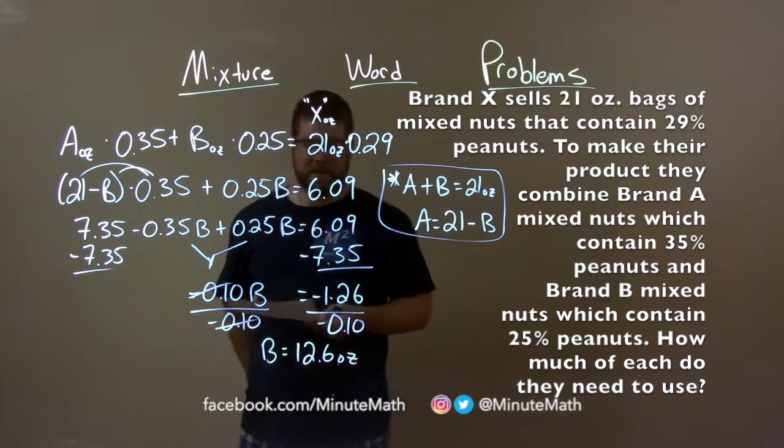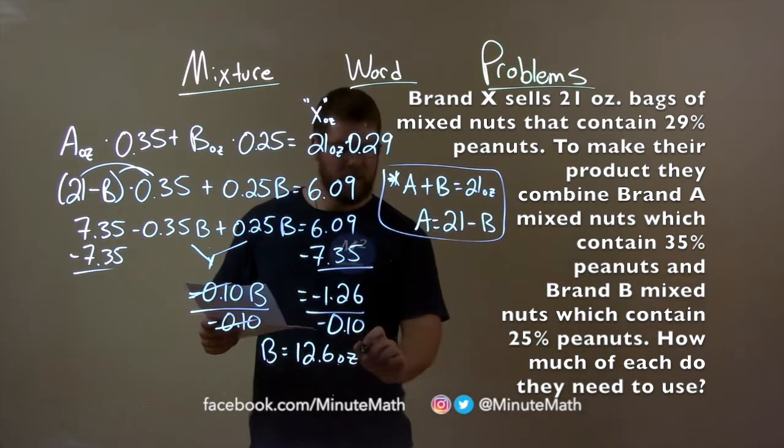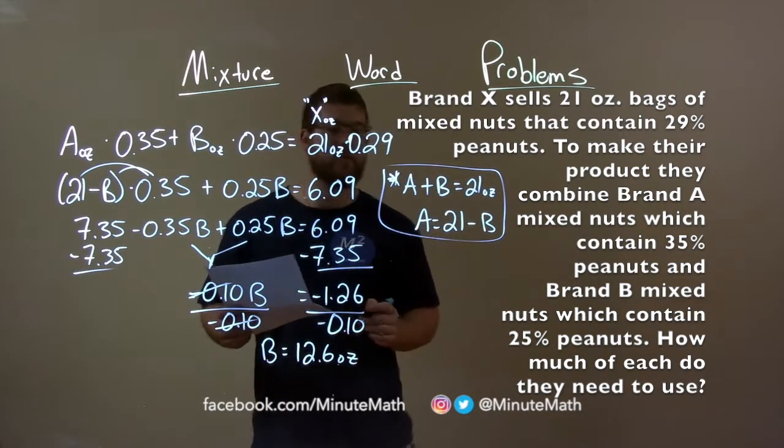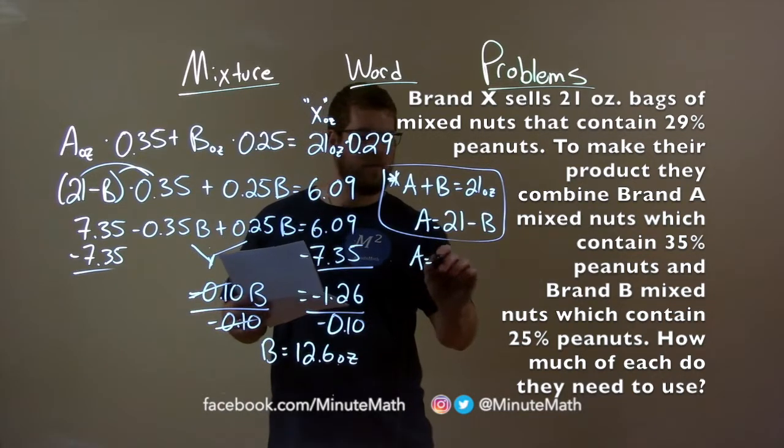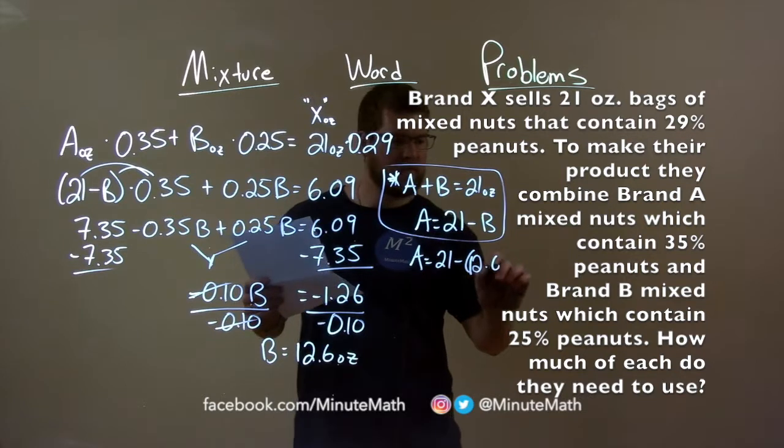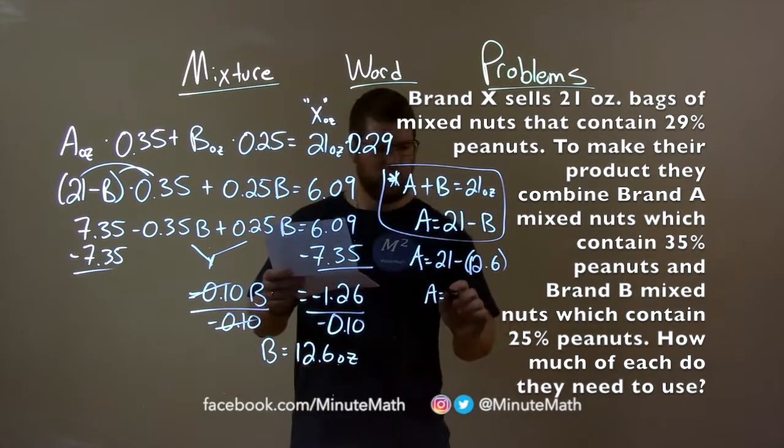So, we got bag B has 12.6 ounces, but we need to find bag A. Come here to our other equation we found and plug 12.6 in for B. So, A equals 21 minus 12.6 and we get A is 8.4 ounces.